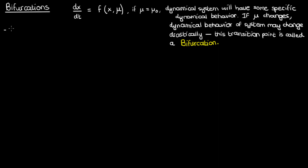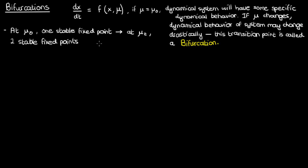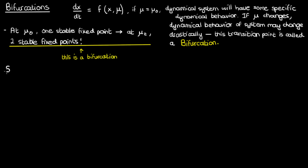For instance, I could start with a value μ₀ at which I might have one stable fixed point, but if I increase my parameter value to μ_t my system might become one with two stable fixed points. This transition in stability of the differential equation would be an example of a bifurcation. Let's go into more depth by talking about some specific types, starting with the saddle-node bifurcation.